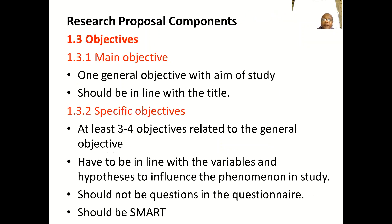Research proposal component number one quality is the objective. Objectives should coincide with the topic of the study. The main objective is one general objective that should be in line with the title of your study. For example, if the study is about factors affecting exclusive breastfeeding, the main objective may be: what factors make mothers at this hospital not practice exclusive breastfeeding? Specific objectives are the minor objectives that break this down further.